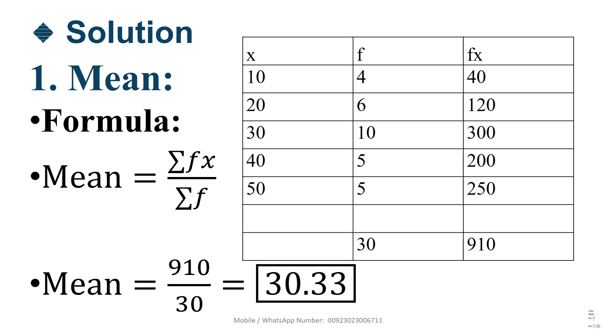It means 4 multiplied by 10, 40, and 6 multiplied by 20, 120, 10 multiplied by 30, 300, 5 multiplied by 40, 200, 5 multiplied by 50, 250.